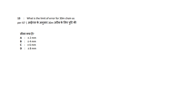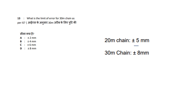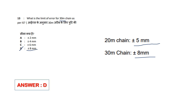Question: What is the limit of error for a 30 meter chain as per IS? For a 20 meter chain it is plus or minus 5mm, and for a 30 meter chain it is plus or minus 8mm. The answer is option D: plus or minus 8mm.